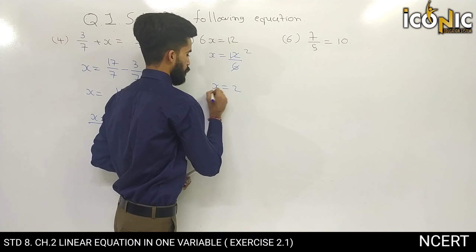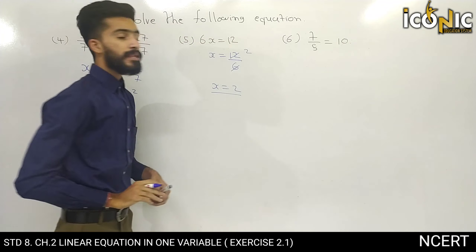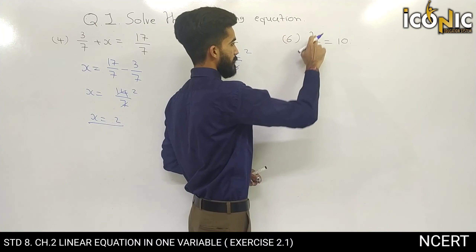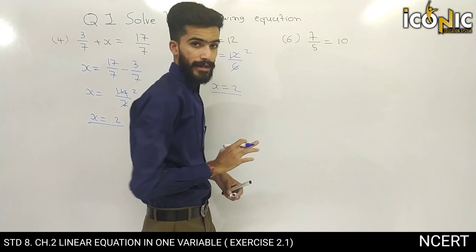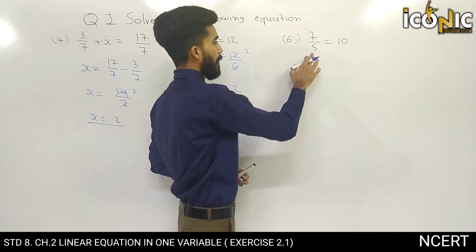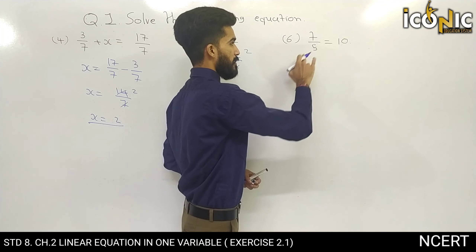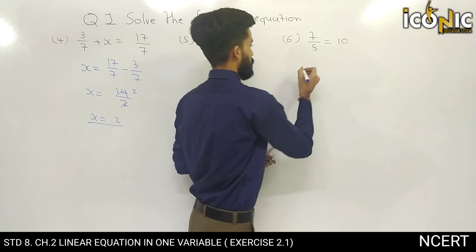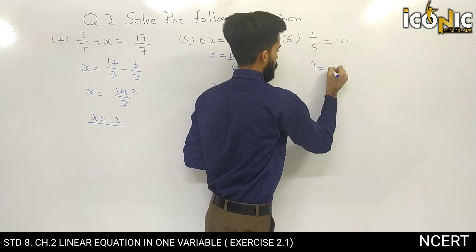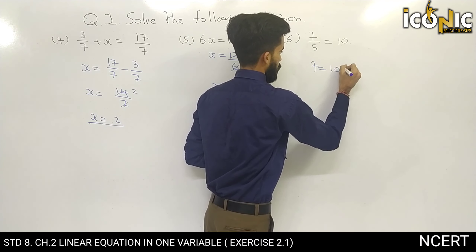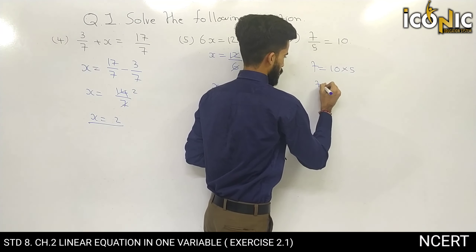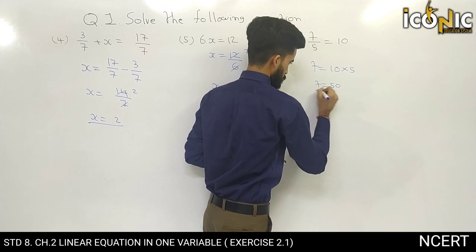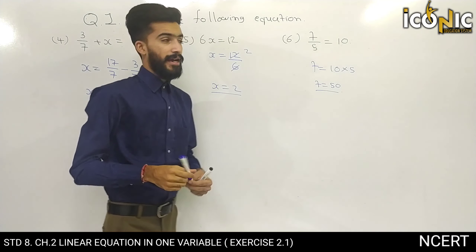So x is equal to 2 is the answer. For the next part, 6 is equal to 10 — here dividing by 5 gives x is equal to 10 divided by 5, so x is equal to 10. And t is equal to 50. This is our answer.